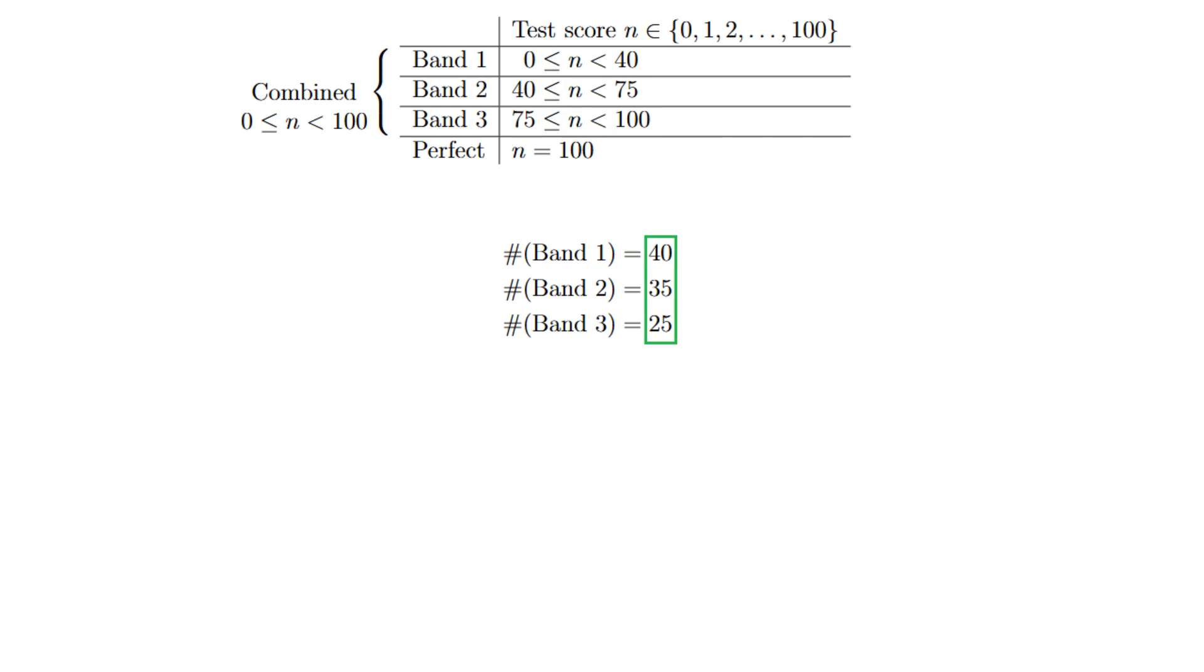Now let's consider this column of numbers and say we want to find the total of the numbers in this column. Well that total is, of course, equal to the number of possible scores in the combined band of all three bands, and so that is from 0 inclusive up to 100 exclusive, and so that makes 100.